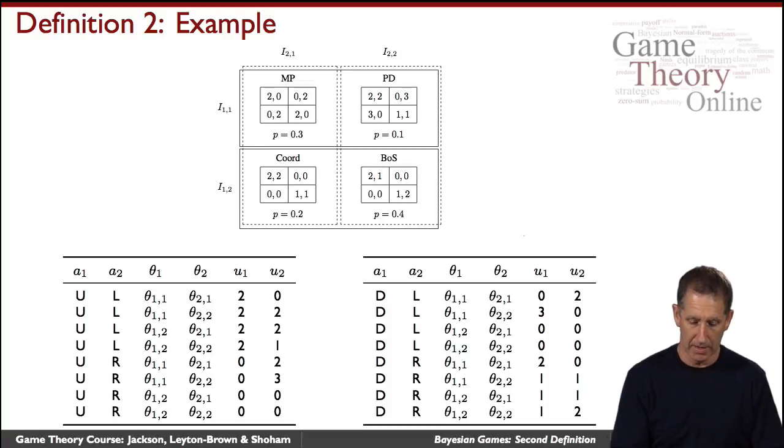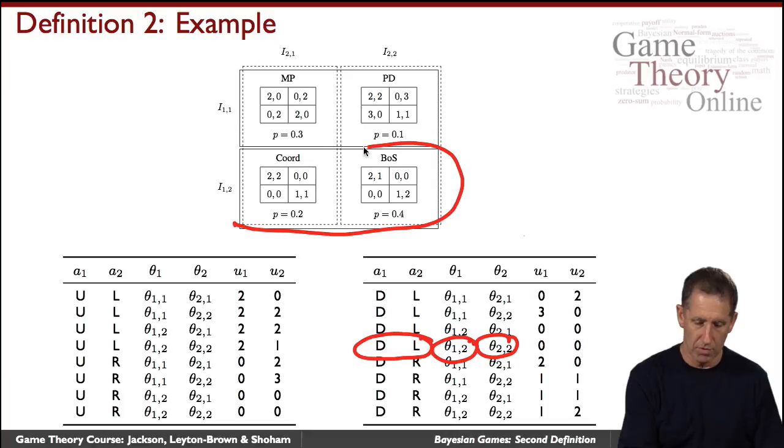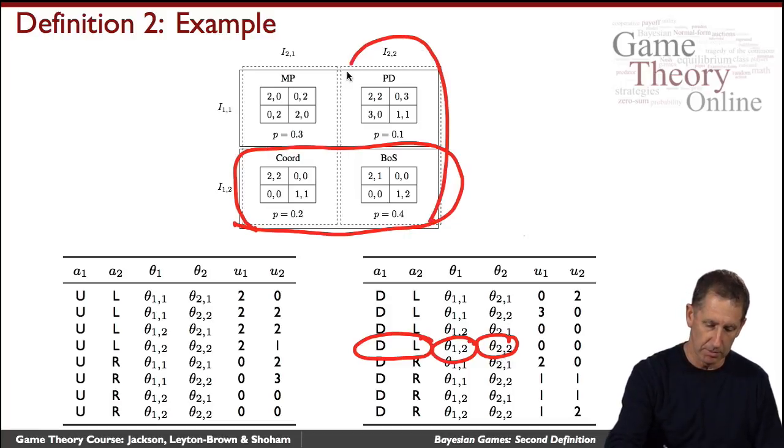And let us look, for example, at down and left when the types are these. Well, what are the types? So the type is this one right here. So this is the information available to the first agent. The second agent has this information available to her, which means that this right here is the game being played.